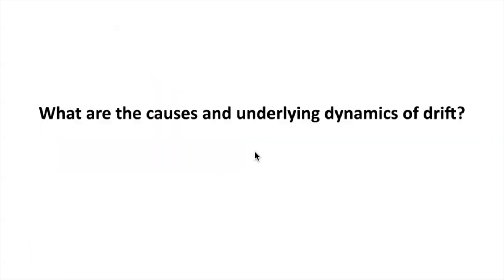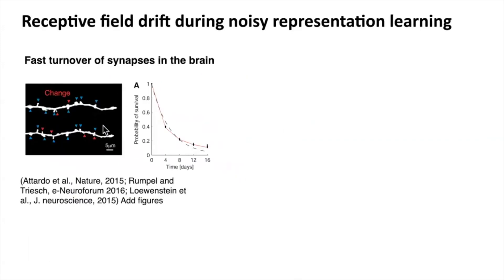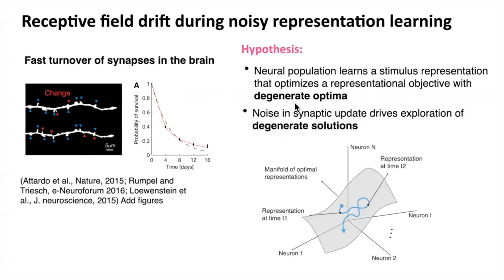The ubiquity of representation drift naturally raises questions about its causes and underlying dynamics. Motivated by the observation that synapses in the brain are highly dynamic — for example, the typical lifetime of synapses in hippocampus is around one or two weeks — we hypothesize that if a neural population learns to represent sensory stimuli by optimizing objective functions that have degenerate optima, then synaptic noise and synaptic updates will drive the network to explore this degenerate solution space, which leads to representation drift.